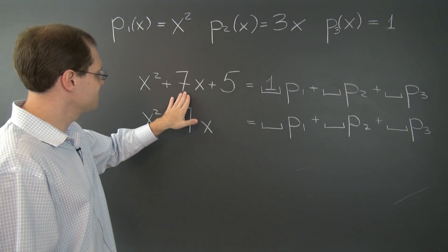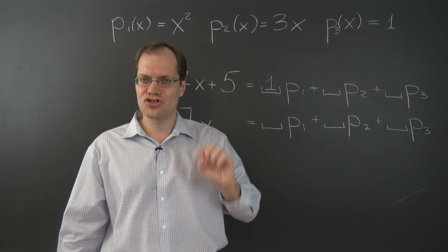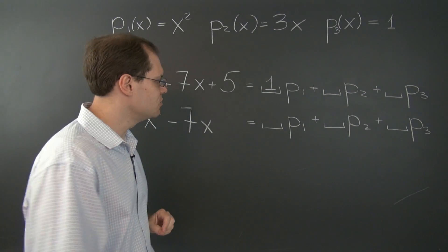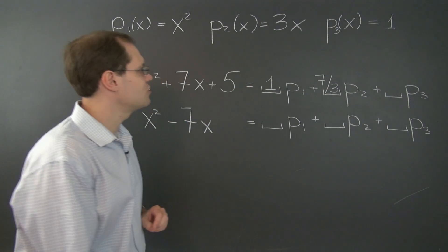And how much of p2 do we need to take? Well, naturally, to match the coefficient of 7, we have to take 7 thirds of p2. So the second coefficient has been determined, 7 thirds.